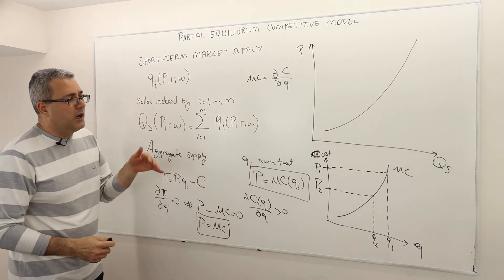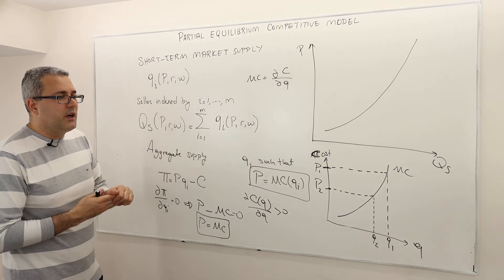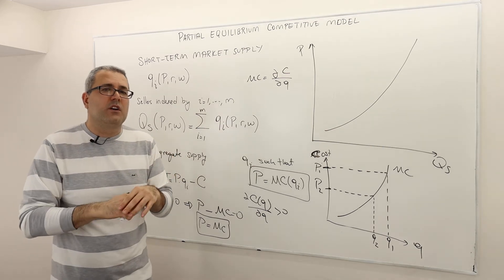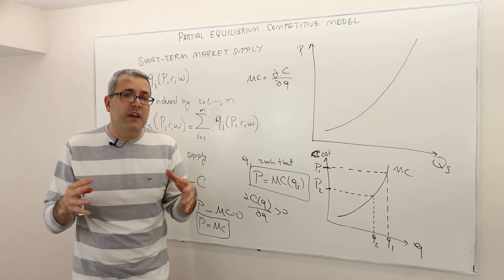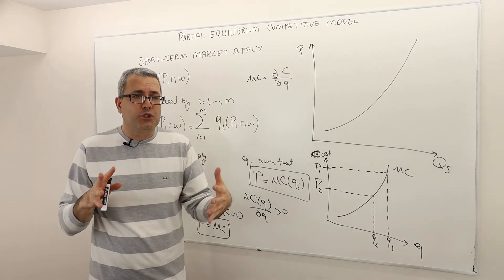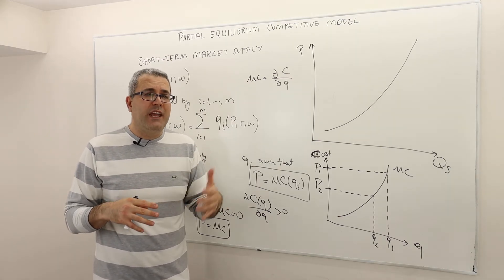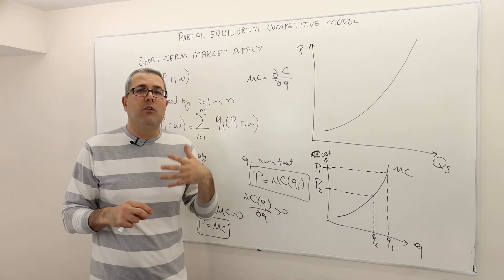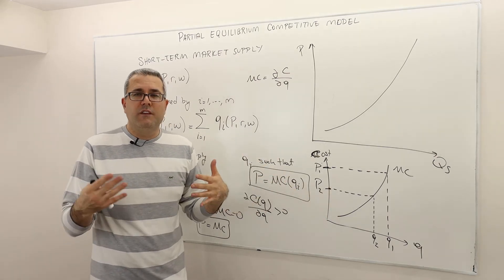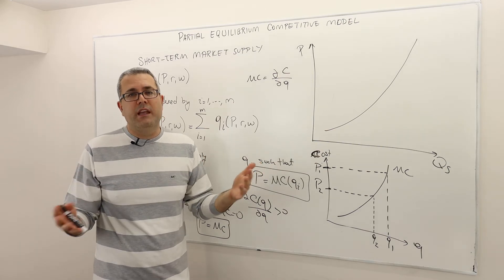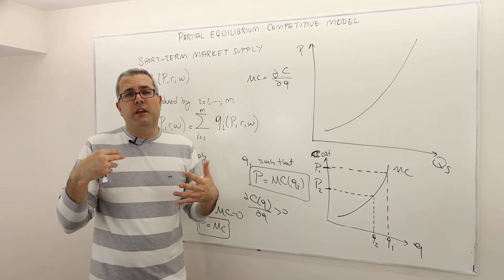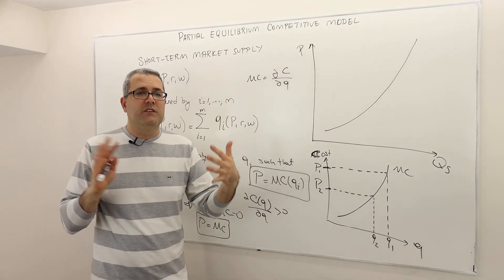This is a short-run decision. There might be some fixed cost, and some parameters are fixed that you can't change — that's why we call it short-term. But if you can change all the variables, all the input levels, all the capital levels — maybe you need to build an additional factory to increase your quantity, requiring more than a year — then every variable becomes a choice variable, and that time period is called long-term.